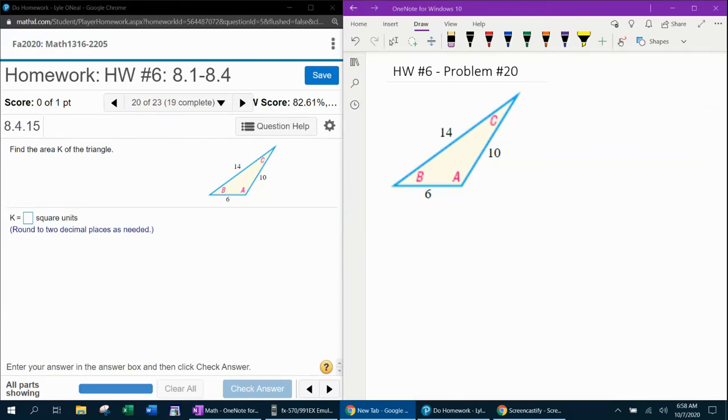All right, here we go. Question number 20 from our homework number six in MyLabMath. They want us to find the area of the triangle. Here, what I want you to notice is that we are given a side, side, side setup.